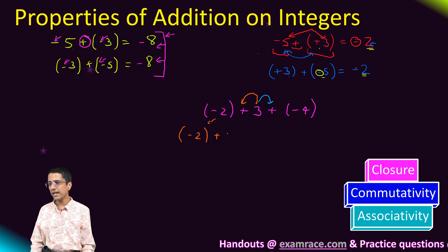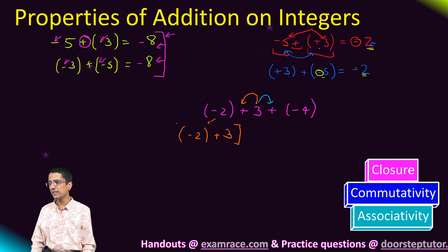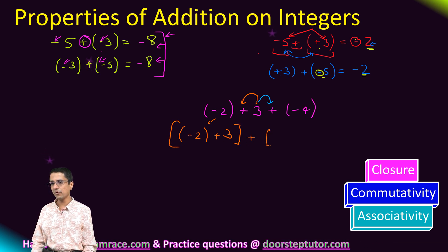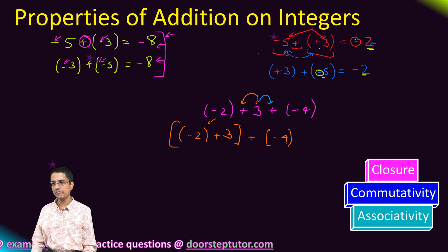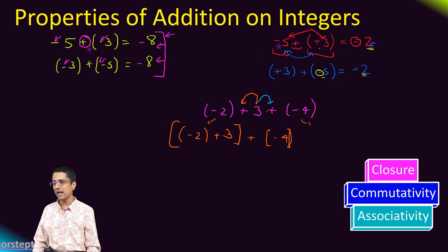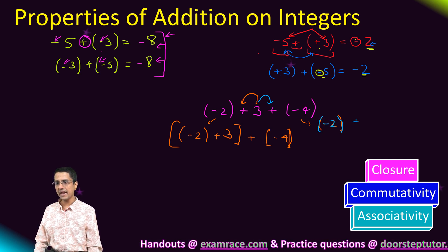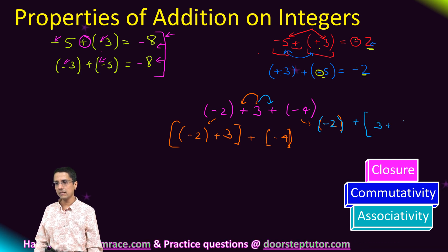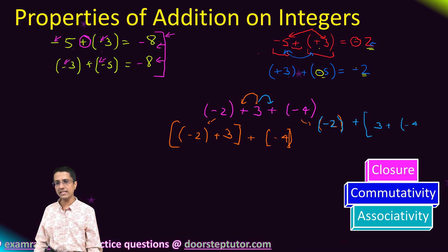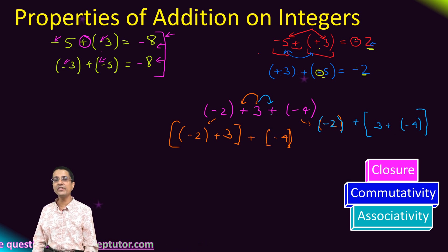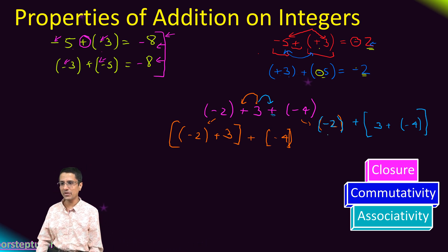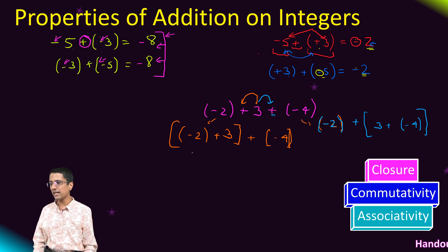In the first case, 3 goes with the first plus sign and minus 4 remains alone. In the second case — written in a different color to make it clear this is a different expression — 3 goes with the second plus sign and joins with minus 4, while minus 2 remains alone. Those are the two groupings we'll solve.